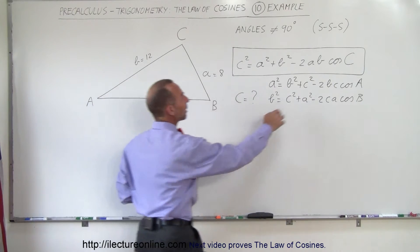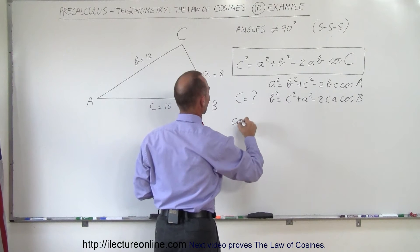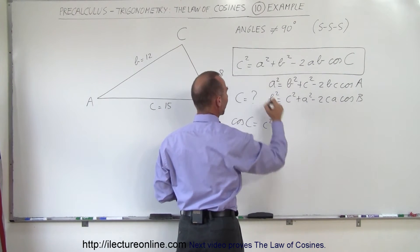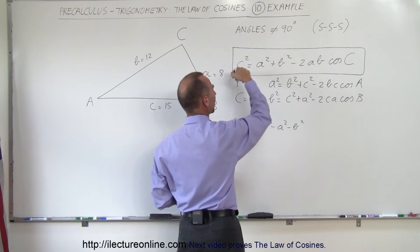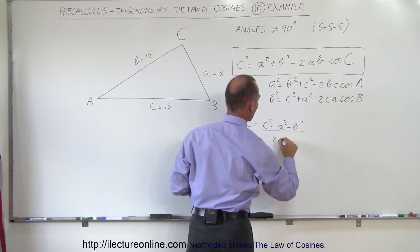We want to find angle C, so we're going to solve this equation for the cosine of C. The cosine of C is equal to C squared minus A squared minus B squared, by moving the A squared and B squared to the left side, and then dividing by the coefficient here, divided by minus 2AB.